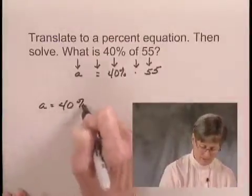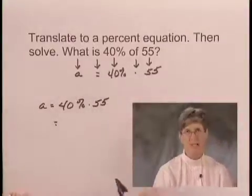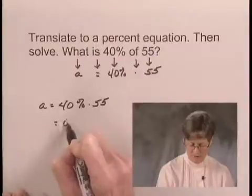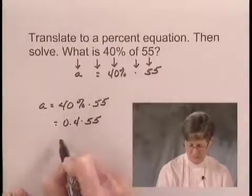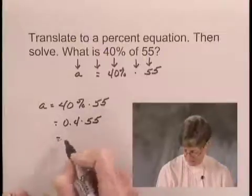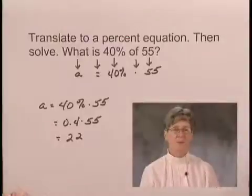we write 40% in decimal notation, which is 0.4, and multiply that times 55. When we do the multiplication, we get 22. So the solution to the equation is 22.